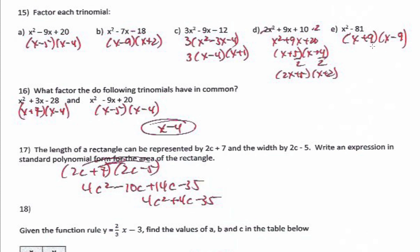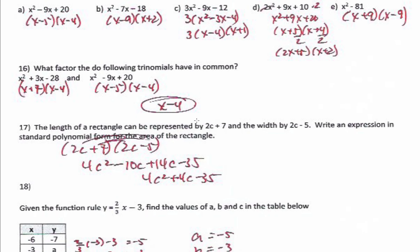For x squared minus 81, I get (x plus 9)(x minus 9). Remember there's really a zero-x in the middle, so I'm looking for two numbers that multiply to negative 81 and add up to zero — that's positive 9 and negative 9.